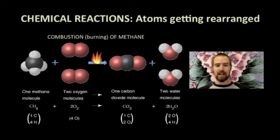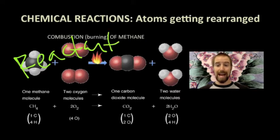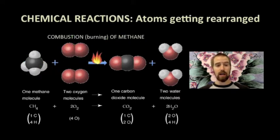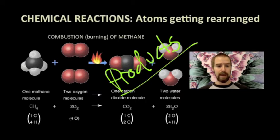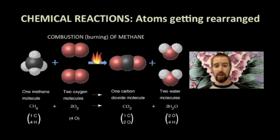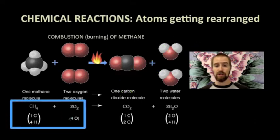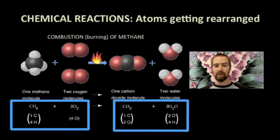We call the methane and oxygen gas molecules we started with reactants, because they are the molecules reacting with one another. And we call the carbon dioxide and water molecules products, because they are what is produced by this reaction. Comparing the atoms we start with and the atoms we end with, we find them to be exactly the same, both in type and in number. They have, however, been rearranged to form new substances.